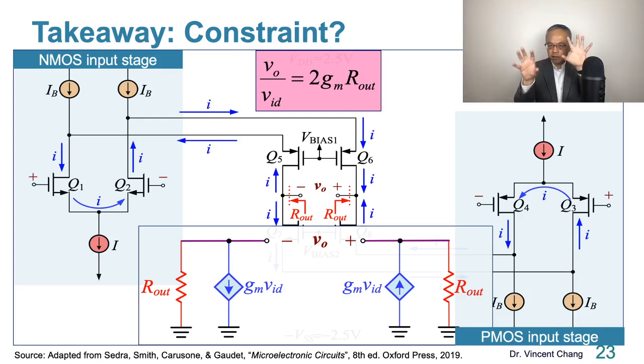But if either one of the input stage doesn't work properly, this equation is going to fail. So think about this. Just try to answer the last question I'm going to ask you. Under what constraint can this gain equation be applied? So I want you to think about this before you move on to the next lecture, which I will explain in detail. I look forward to seeing you in the next lecture. Thanks for watching.